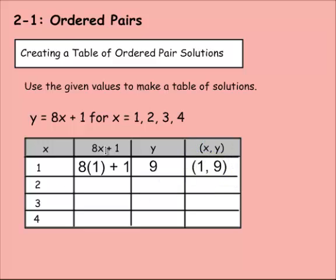Let's look at this. 8x plus 1 for 2. So it would be 8 times 2 plus 1. 8 times 2 is 16, plus 1 is 17. So y is 17. So our ordered pair would be when x is 2, y is 17.